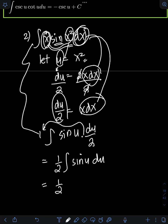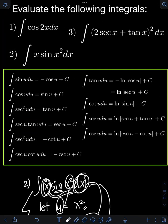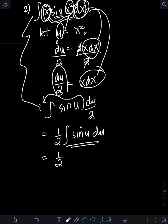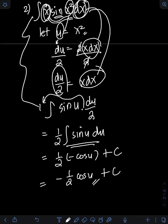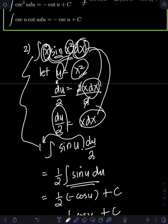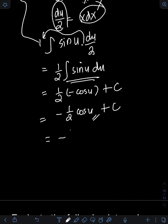So we will have one-half times the integral of sine u du. Looking at the formula, the integral of sine u du is equal to negative cosine u plus c. So therefore, we will have one-half times negative cosine u plus c, or negative one-half cosine u plus c. Transforming back u in terms of x squared, the final answer will be negative one-half cosine of x squared plus c.